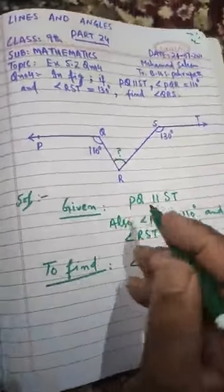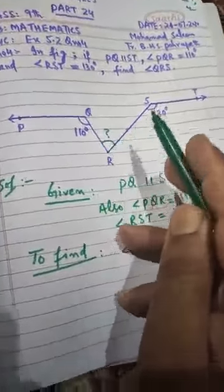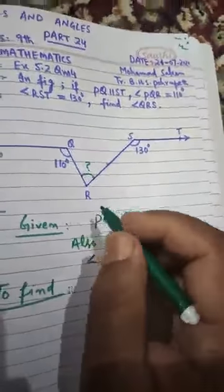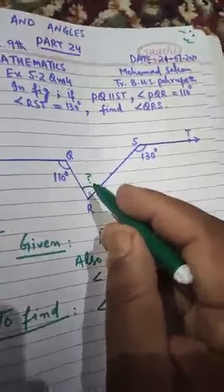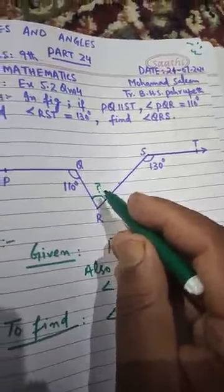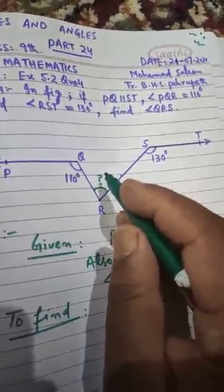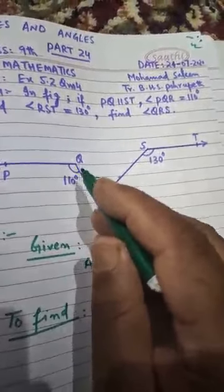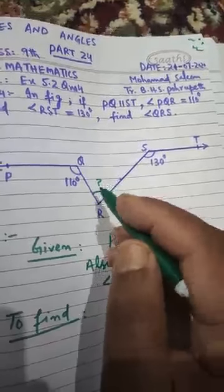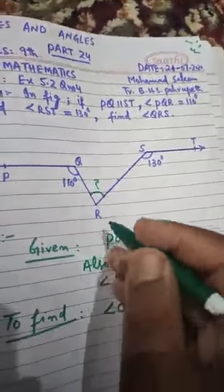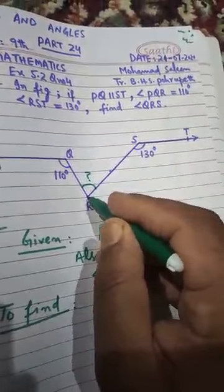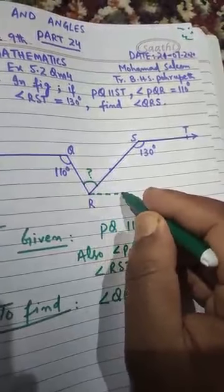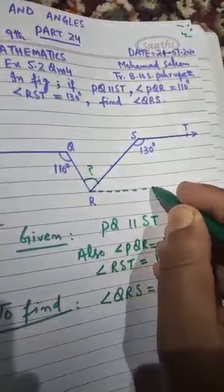We need to find angle QRS. We cannot find it directly, but we will try to make it easier. We will find an easy method by which the measure of angle QRS becomes known. For this, I am drawing a line here — since I am doing a construction, I will draw a dotted line here.